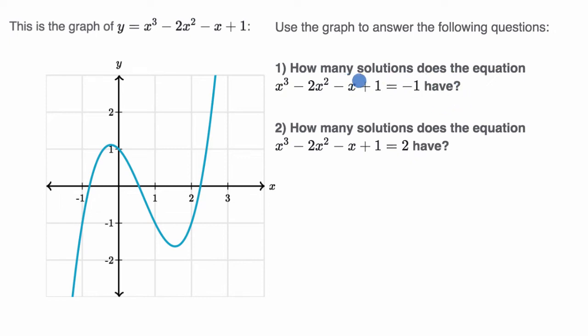When we think about solutions to this, we could say, all right, well, let's imagine two functions. One is y equals x to the third minus two x squared minus x plus one, which we already have graphed here. And let's say that the other function is y equals negative one. And then how many times do these intersect? That would tell us how many solutions we have. So that is y equals negative one.